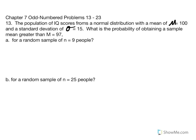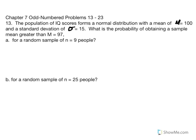Chapter 7, Problems 13 through 23. Number 13: the population of IQ scores forms a normal distribution with a mean of 100 and a standard deviation equal to 15.